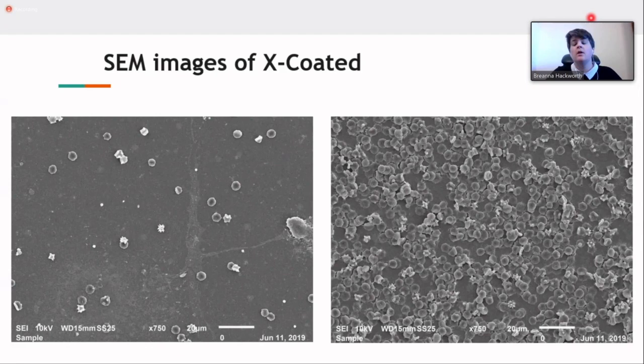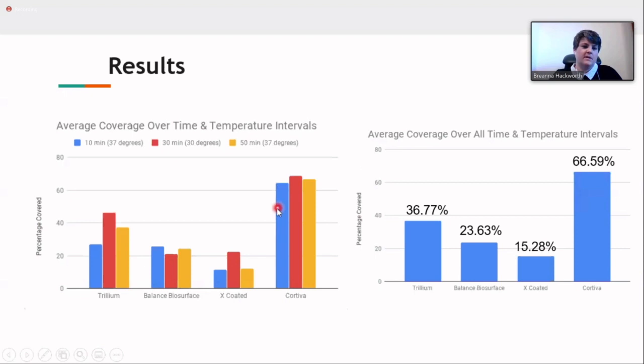What are the results of this? On the chart on the left here, you can see the time and temperature intervals and how they varied within each circuit. On the right-hand side, you could see the average of all the time and temperature intervals together. Trillium had about 37% coverage of adhesion. Balanced biosurface had about 24%. X-coating, 15%. And Cortiva had 67%.